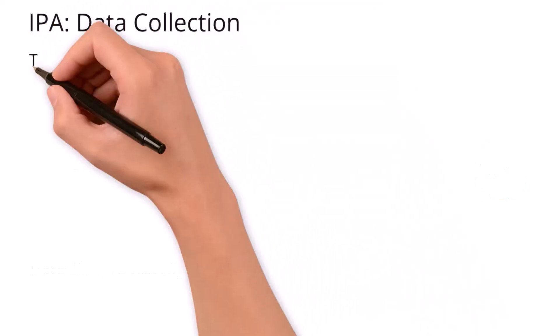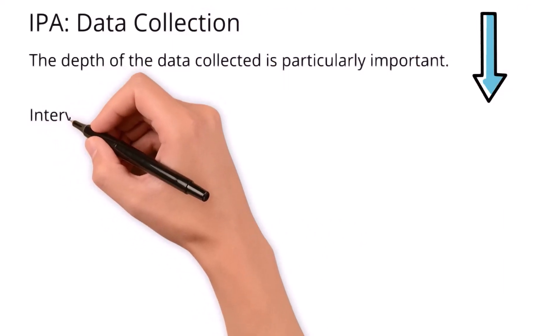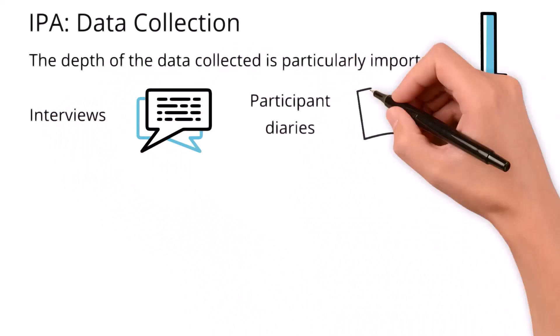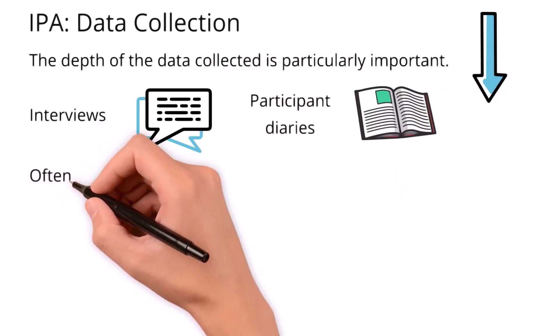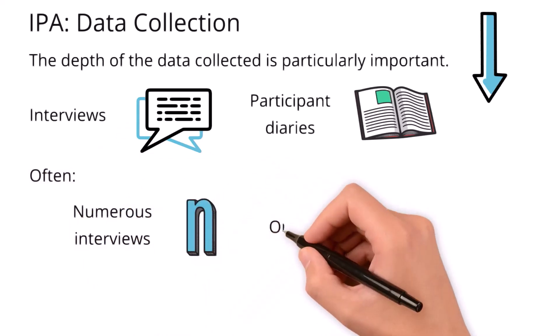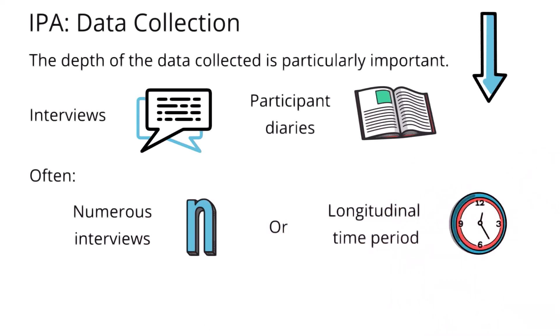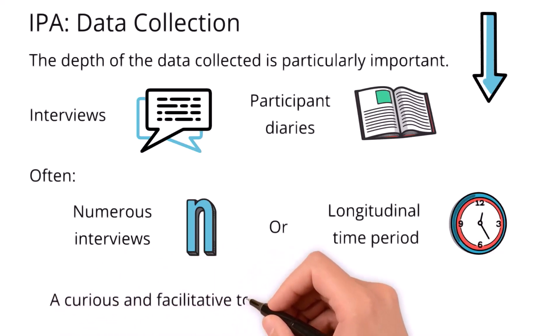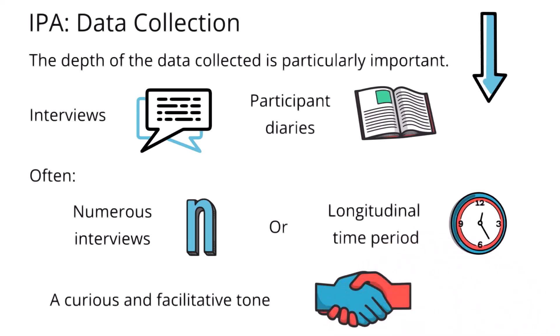For IPA data collection, the depth of the data collected is particularly important. Interviews and participant diaries are common data collection methods used within IPA. When it comes to interviews, in order to achieve the required depth, often numerous interviews are required and the phenomenon might be studied over a longitudinal period of time. Within IPA interviews, the interviewer is more likely to adopt a curious and facilitative tone rather than a challenging and interrogative tone, in order to facilitate depth and the participant's own voice within the interview.